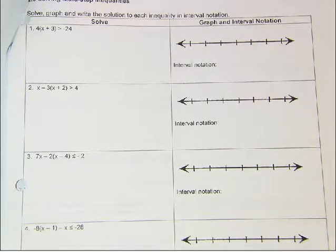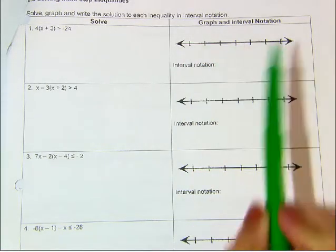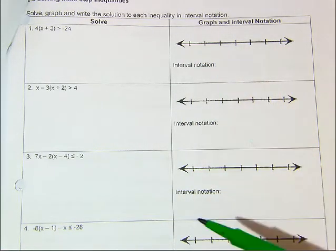These are the notes for 2.3. So we are doing just like we did in 2.1 and 2.2. We are solving an inequality and then we are going to show the solution on the number line. But now we need to write an interval notation.